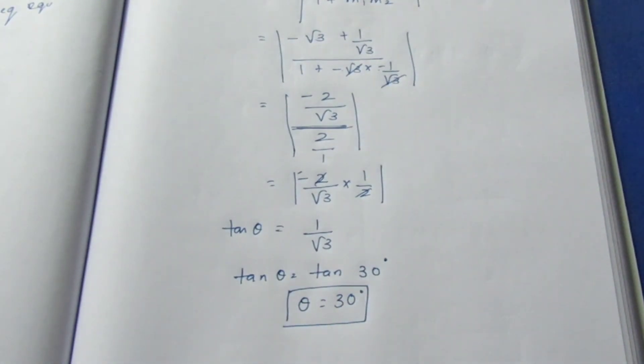So they have asked for the angle. We have found the angle between the lines is 30 degrees. That is all with the sum. Thank you.